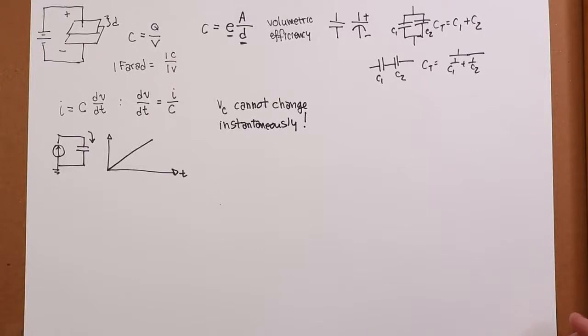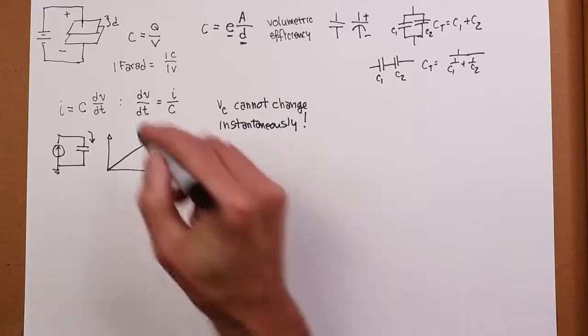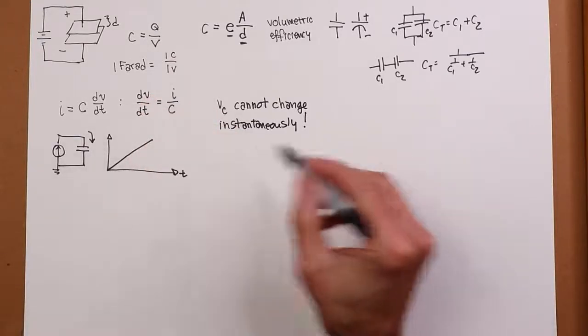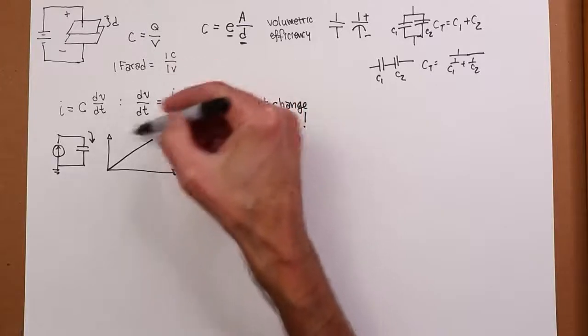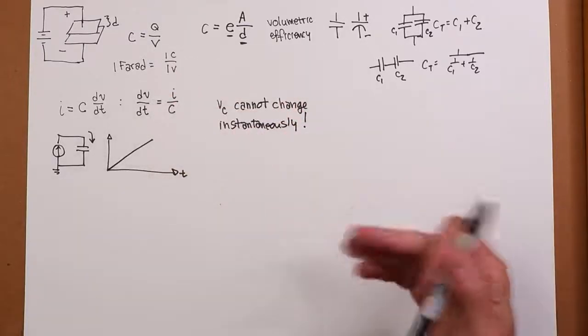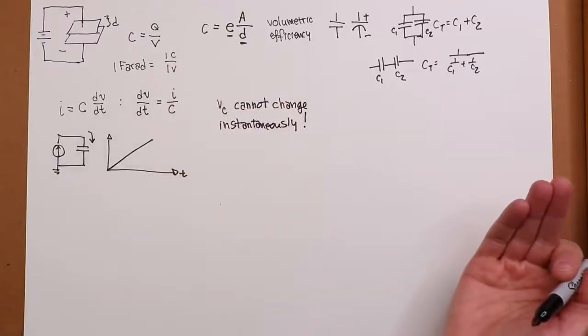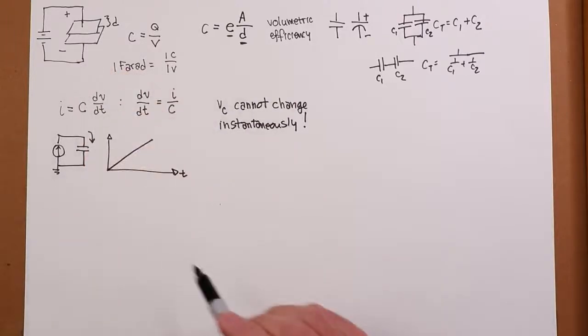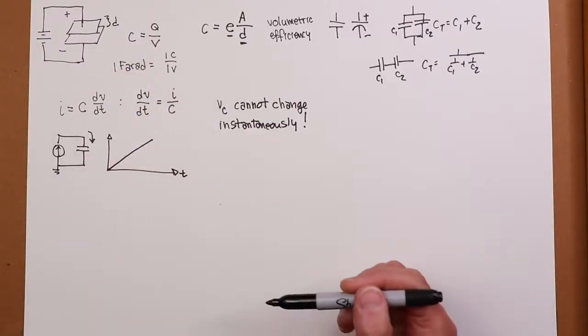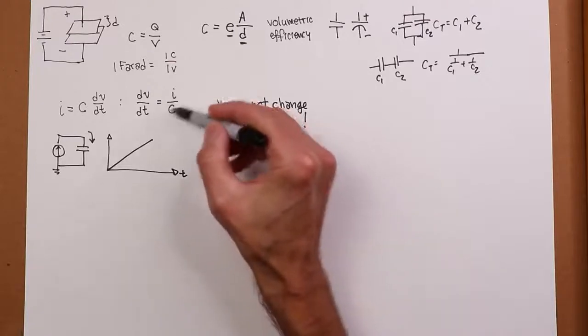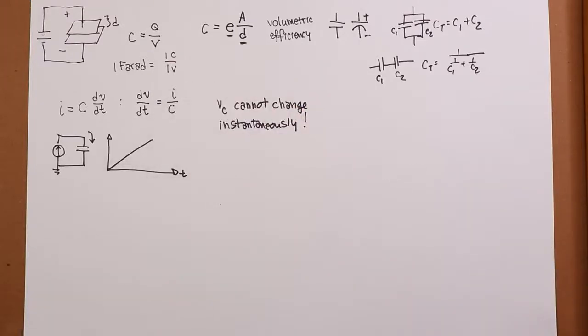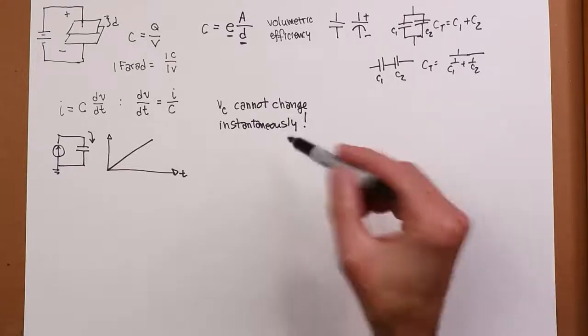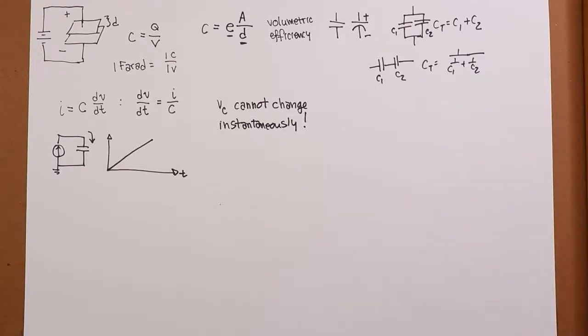Why? Well look at the equation. An instantaneous change means dv/dt itself is instantaneous, it's infinite. In other words it's straight up and down. That slope is infinite. Well the only way you can get that is if you have an infinite current source. There is no such thing as an infinite current source, so VC cannot change instantaneously. And this has very important implications in circuit design.